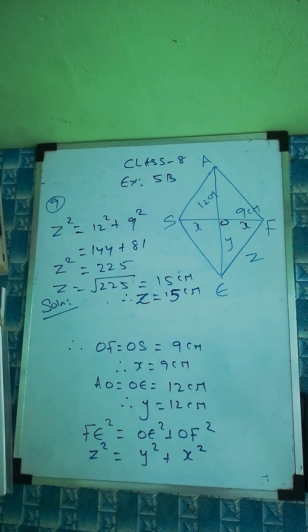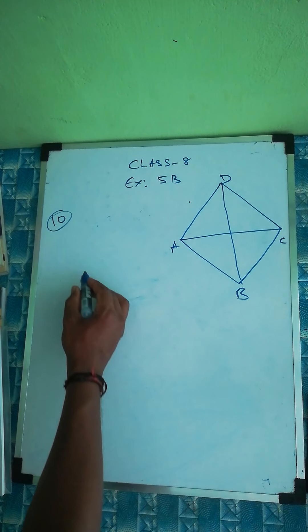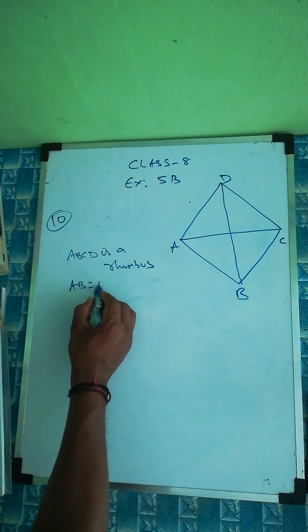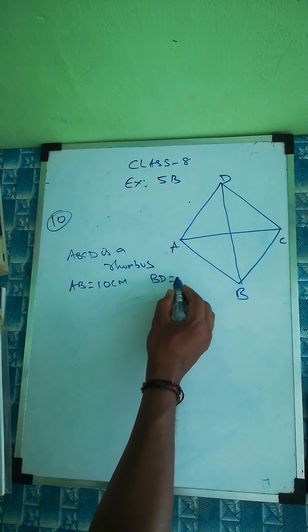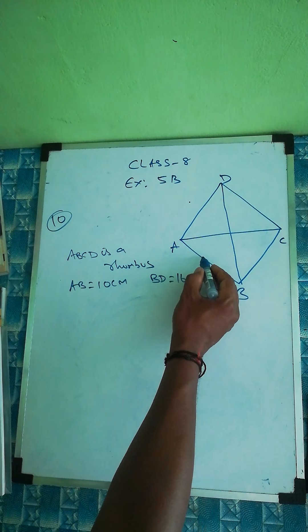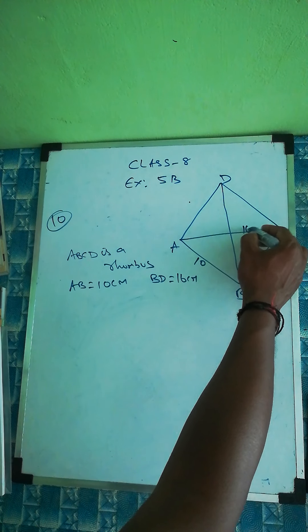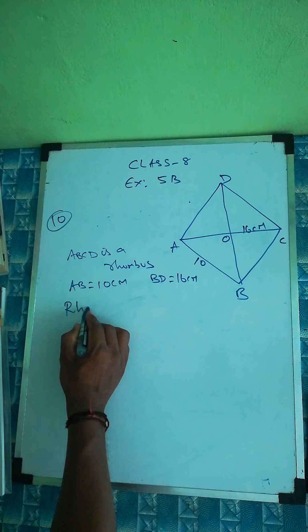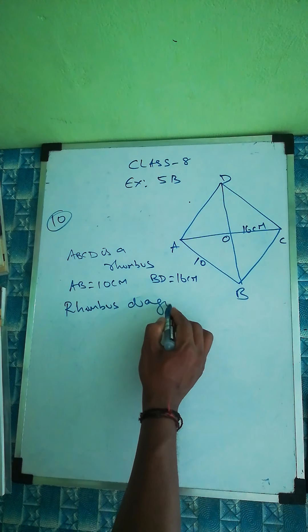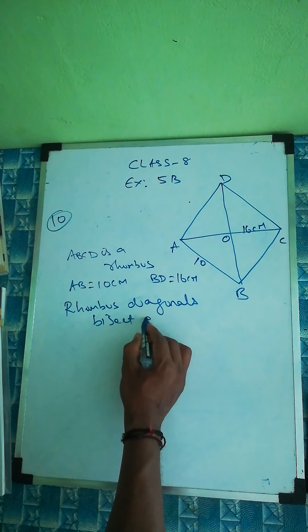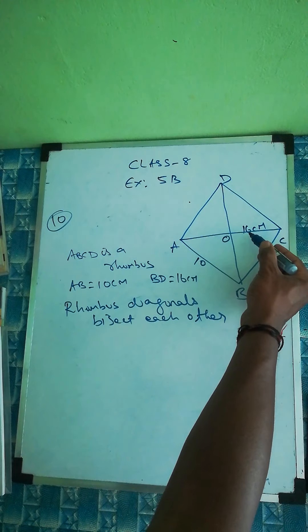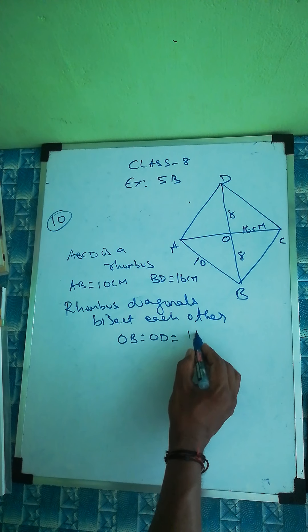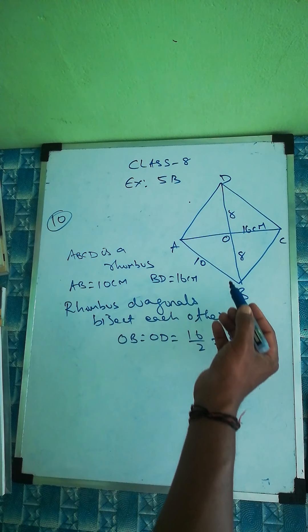Question number ten: In rhombus ABCD, AB is given as 10 centimeters and diagonal BD is given as 16 centimeters. Since diagonals of a rhombus bisect each other, OB equals OD equals 16 divided by 2 equals 8 centimeters.